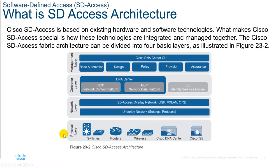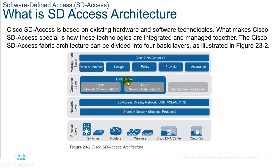The architecture comprises four layers. The physical layer includes switches, routers, wireless, the Cisco DNA Center, and the Cisco ISE. While the Cisco DNA Center and ISE devices are physically in the physical layer, their functionality operates on the controller layer. The controller layer and the physical layer pertaining to Cisco DNA Center and Cisco ISE are essentially the same in that regard.